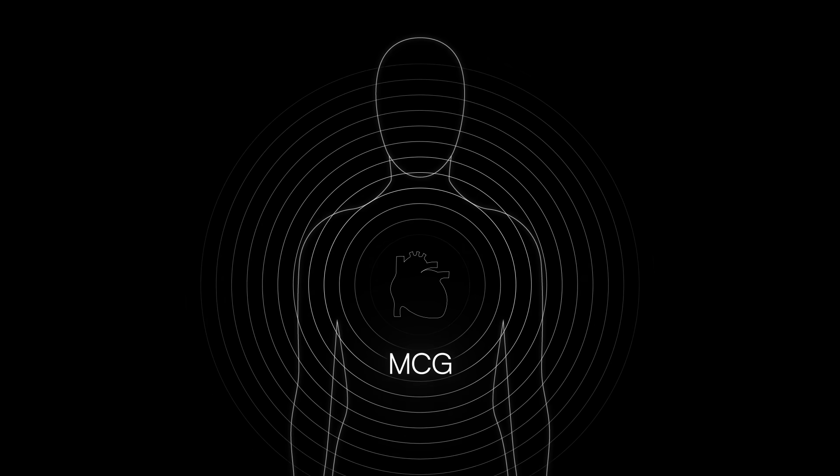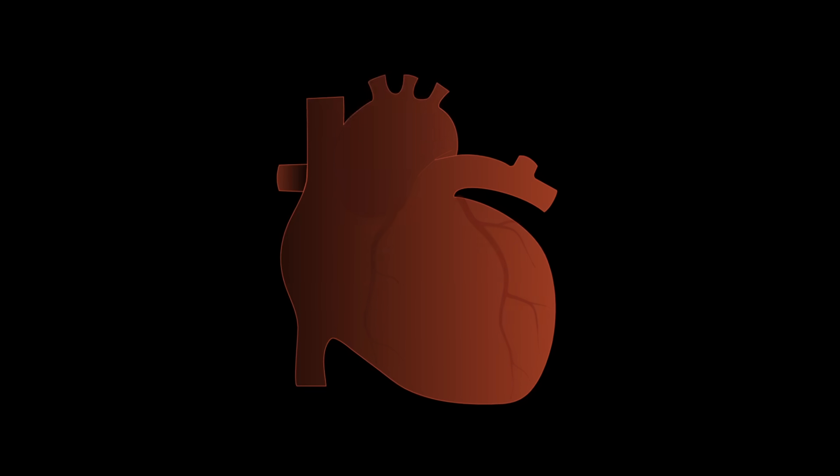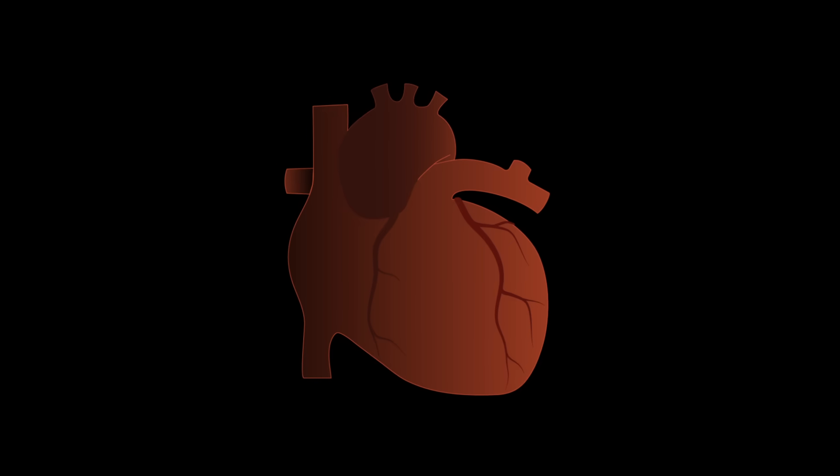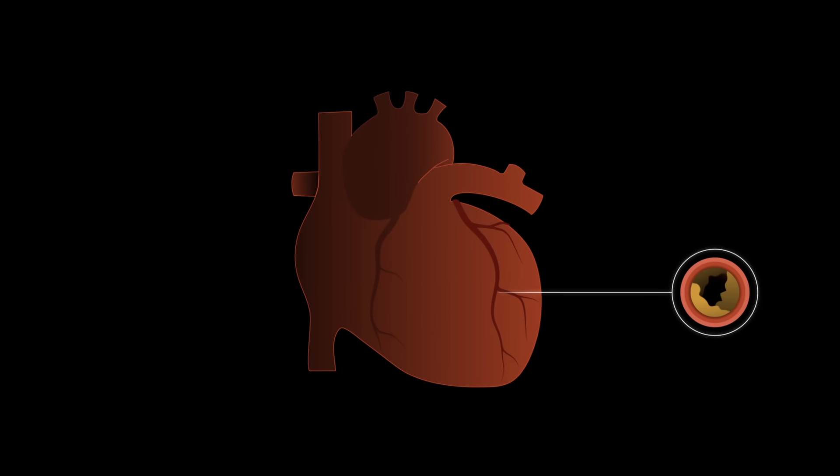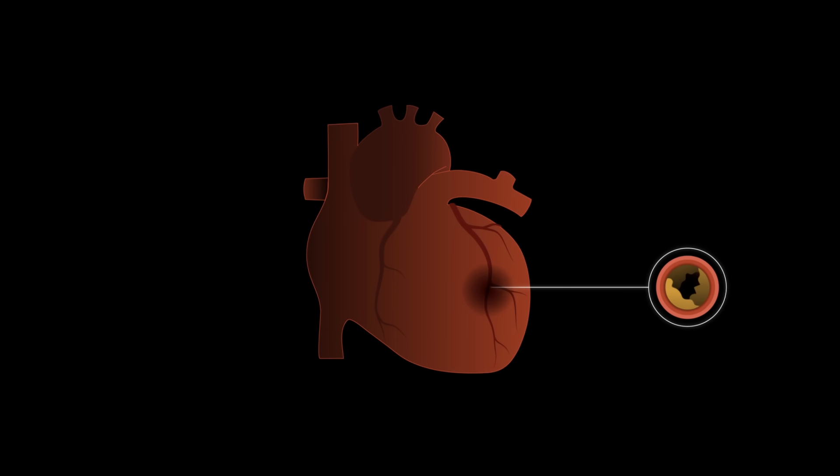MCG can act as a magnetic field camera recording images and videos of the magnetic field of the heart. In a heart attack, blood flow in the coronary arteries is reduced, causing damage to the heart tissue. The damaged region changes the flow of current in the heart.